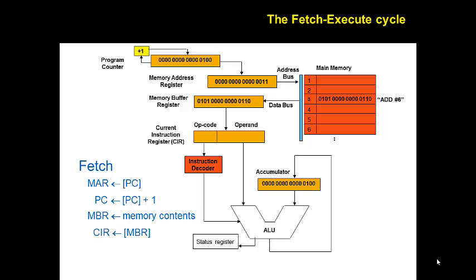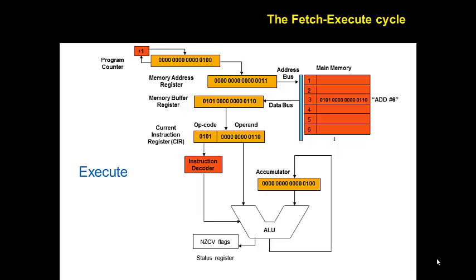That's the fetch phase done. We're now going to move into the execute phase by copying the contents of the memory buffer register into the current instruction register. The opcode part of the machine code indicates the actual instruction to be executed — in this case our add. The control unit part of the CPU will have decoded this and will set up all of the various logic gates and pathways etc.